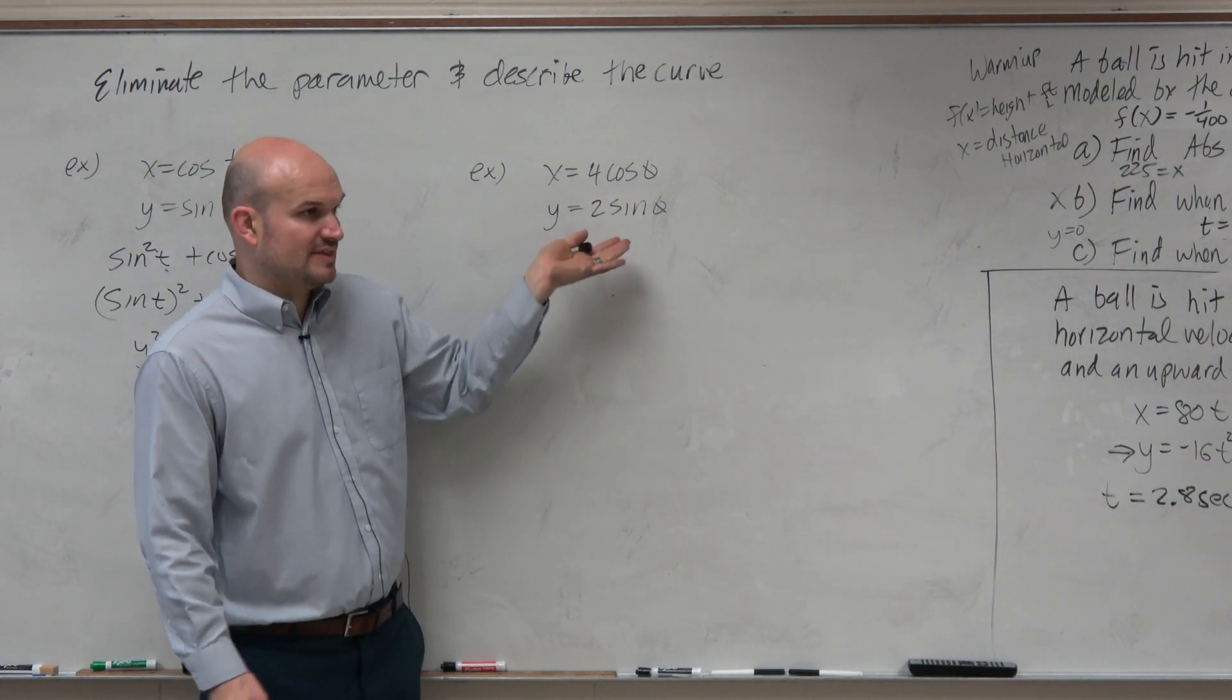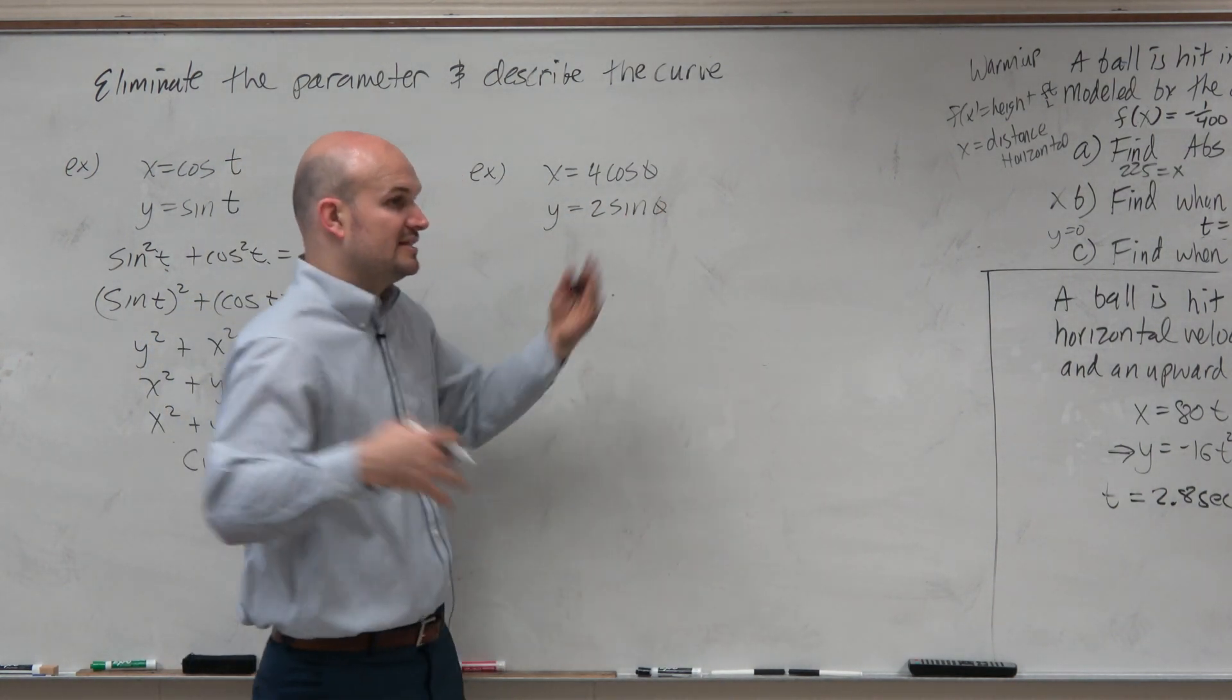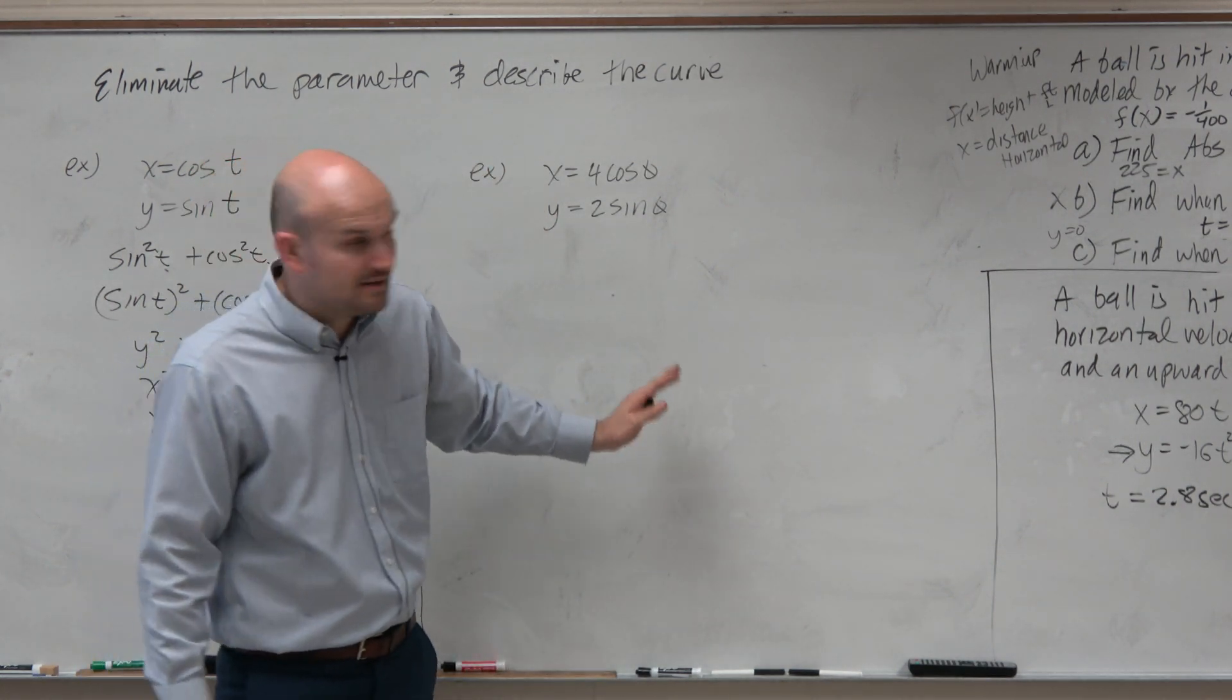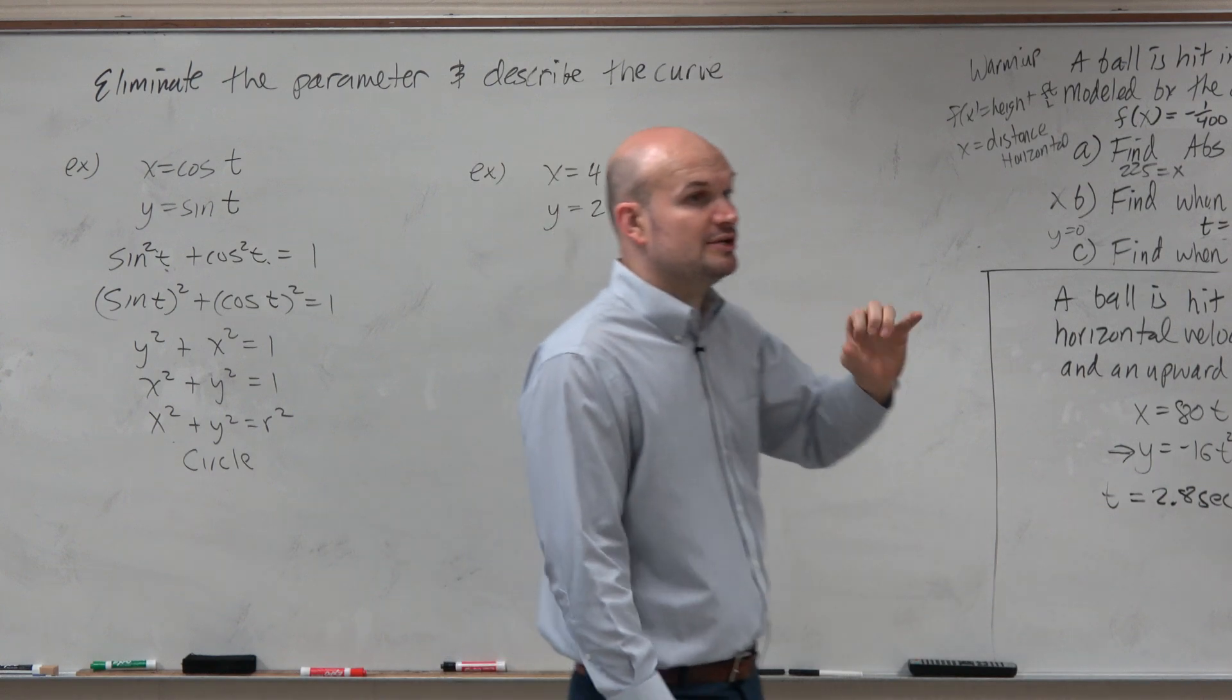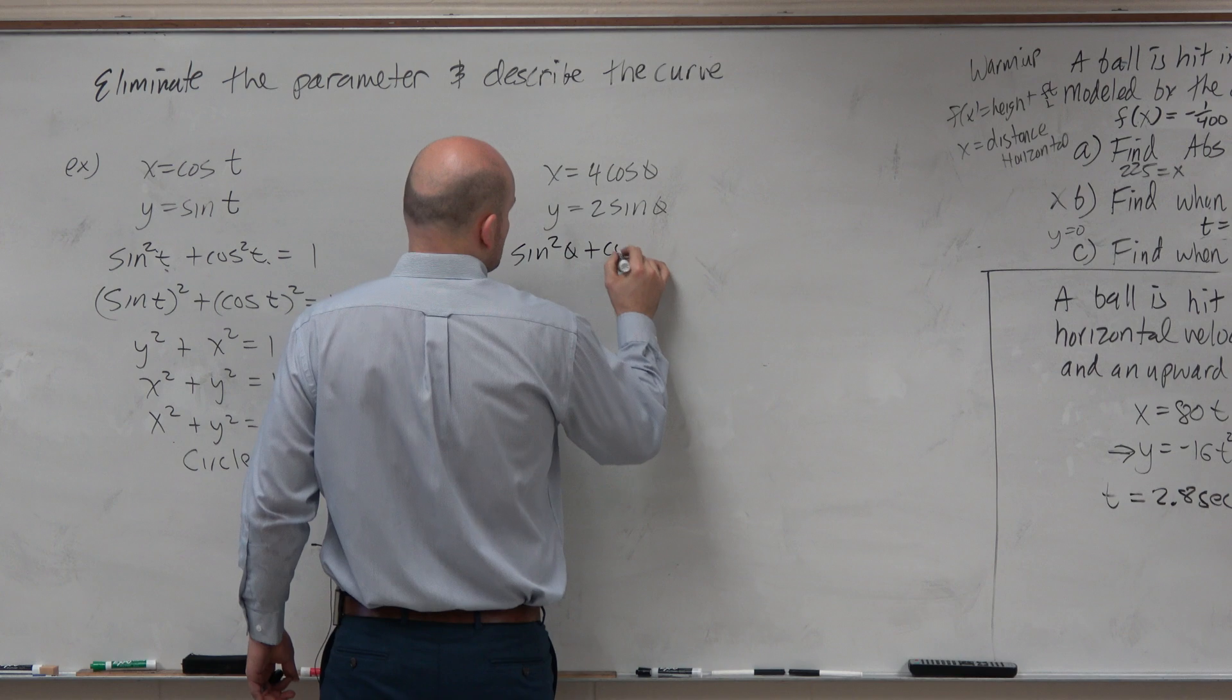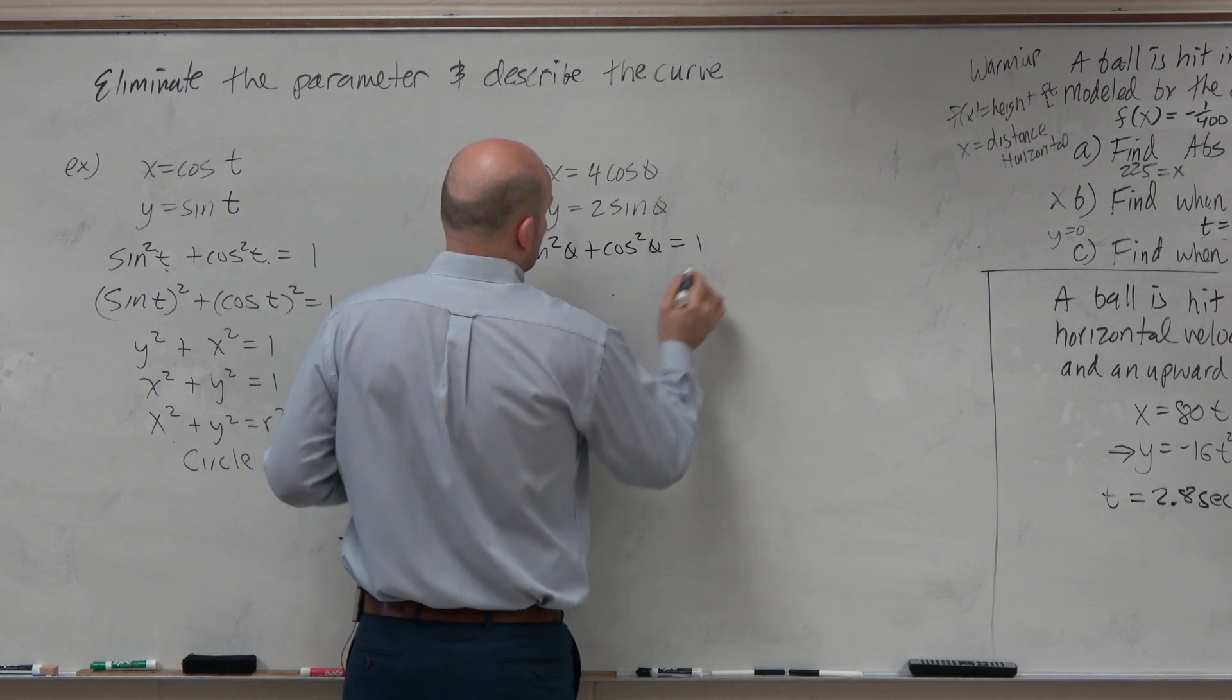We can't solve for like one of our thetas in this case. In this case, we're going to eliminate the parameter theta, so I won't change it to t. We'll just leave everything as theta. But we do recognize, again, we're going to want to use that Pythagorean identity. So we'll have sine squared of theta plus cosine squared of theta equals 1.